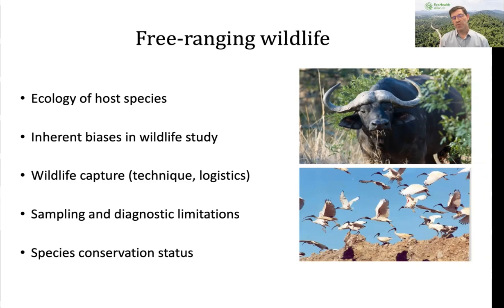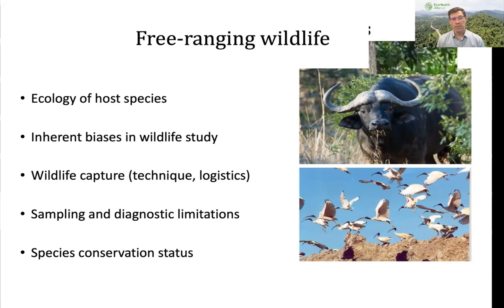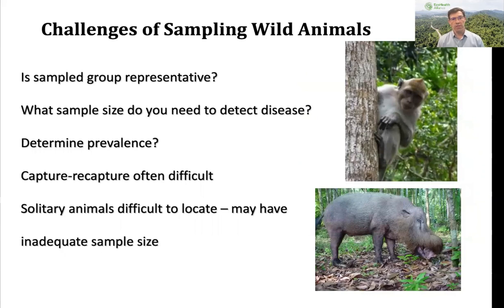More importantly, you have to be aware of the conservation status of the species you're working with — if it's protected, rare, or endangered, you have different considerations in terms of the sampling you do and how you handle those animals. The concern will be greater if there's any kind of injury or destructive sampling where you need to euthanize an animal, which will have more impact on the population if it's a rare or endangered species versus a common and abundant one. These are all things that need to be considered when you set up your study design.